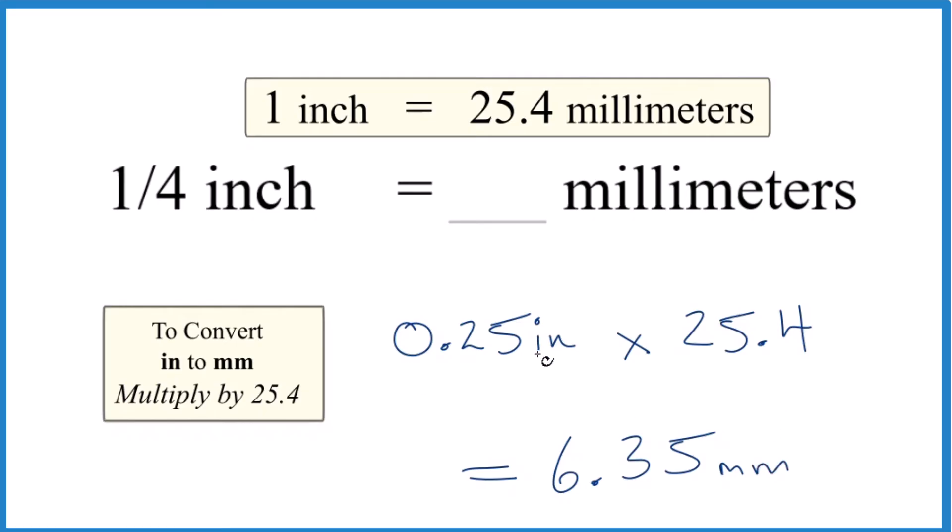If you want to do it with units, you know that you have 25.4 millimeters in one inch. So you could call this millimeters over inch. And then when you multiply, you have inches on the top and the bottom. They cancel out. That's why we got millimeters.